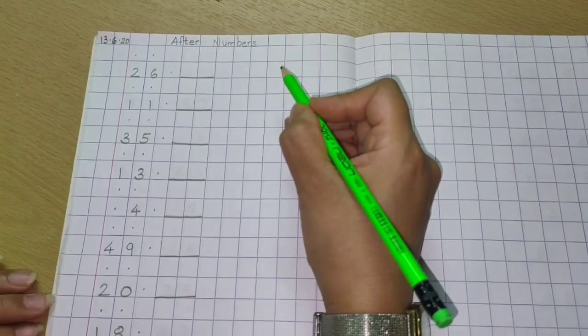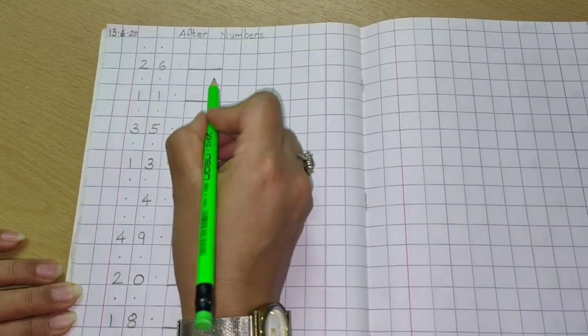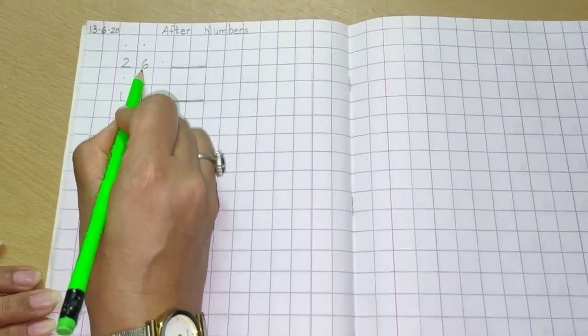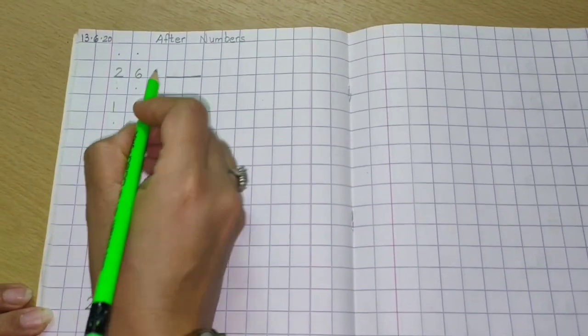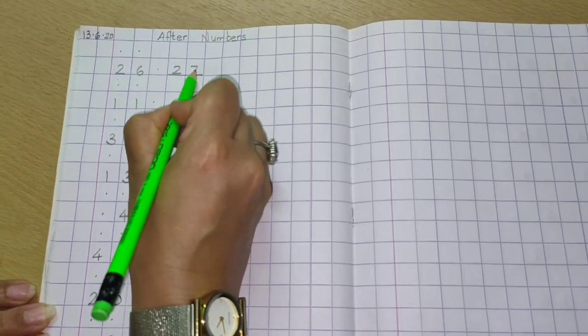Children, so now write, make the format nicely, neatly. After writing the format, then we will write the answers. So first number was 26. After 26 will come, yes, 27.